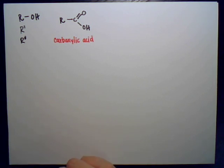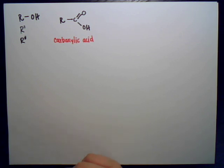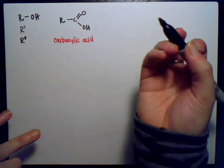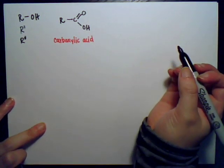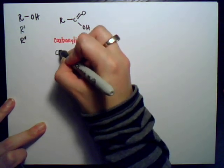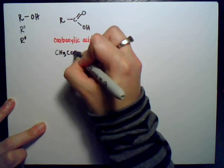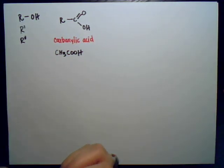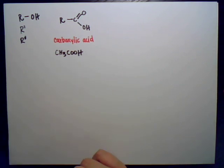A good example of carboxylic acid would be acetic acid, which is vinegar — one of the simplest ones. The formula for that is CH3COOH. Written out in condensed formula, CH3COOH is just acetic acid or vinegar, so that would be a carboxylic acid.